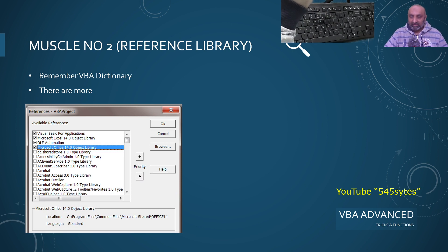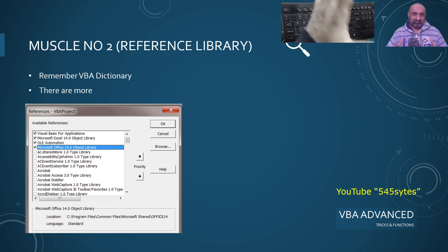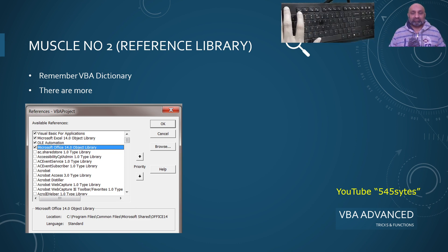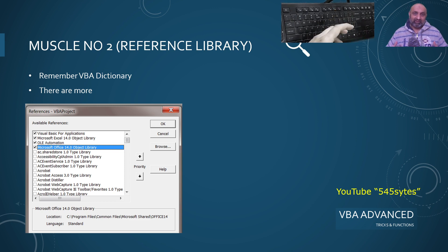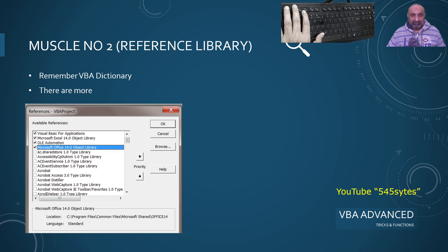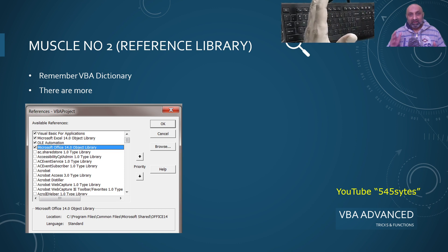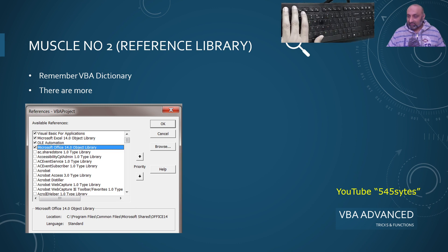I talked about the VBA dictionary when I was talking about reserved words and variables in the first series, VBA Basic. That dictionary had a certain collection of commands related to Microsoft Excel. Now, libraries are the technical term, and in VBA it is called a reference. So let's go and see these libraries, references, or dictionaries — whatever helps you understand.